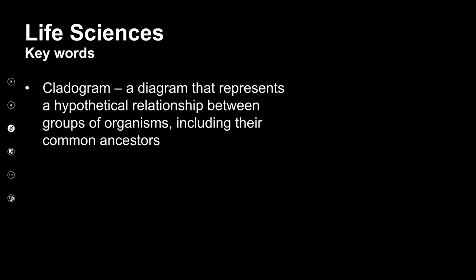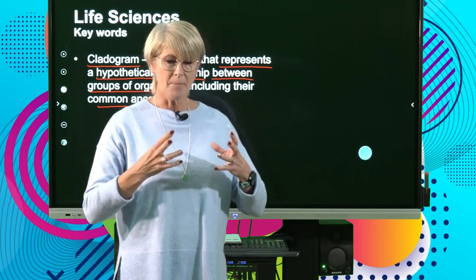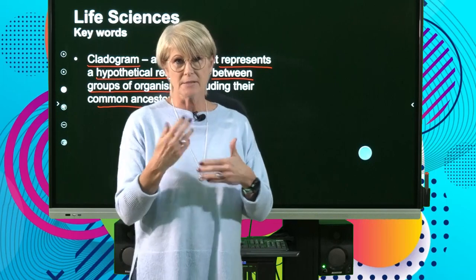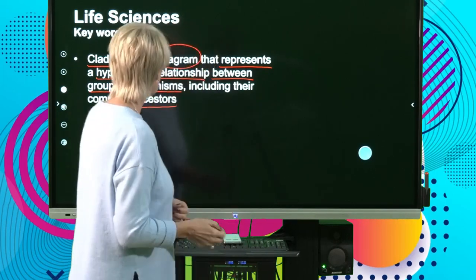Then we're going to have a look at a cladogram. It's a diagram — one of our evolutionary diagrams — and basically what it does is represent hypothetical or theoretical relationships between groups of organisms and their common ancestors. We can see how many species share a common ancestor and we look at the evolution that occurred over time of these organisms.